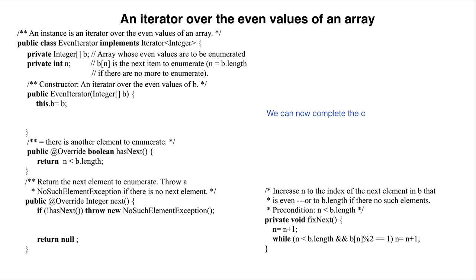We can now change the constructor to truthify the definition of n, setting n to negative 1 first so that the call on fixNext will start looking at B sub 0.